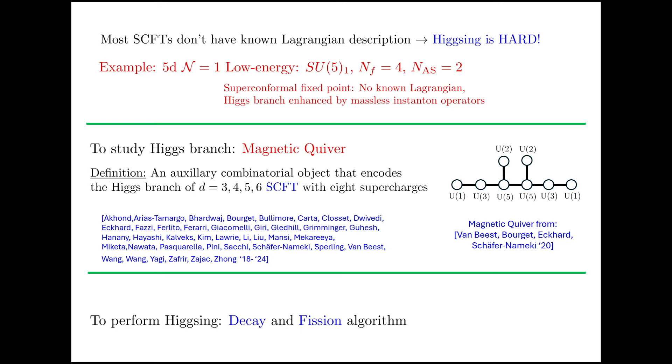Take the 5D example. At low energy, I can describe it as a SU(5) gauge theory, one Chern-Simons level, four flavors, two antisymmetrics. But when I move it to the UV superconformal fixed point, I don't have a Lagrangian for it anymore. And the Higgs branch itself is enhanced due to massless accidental operators. But nevertheless, I can still study the Higgs branch at the fixed point.